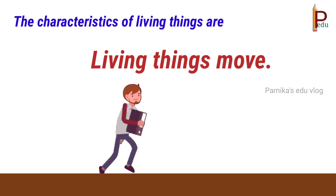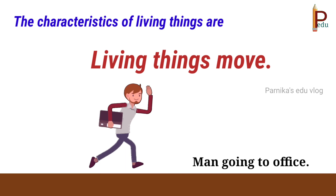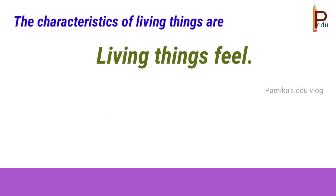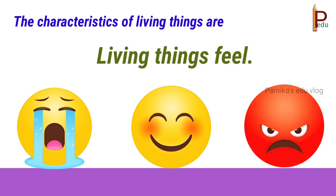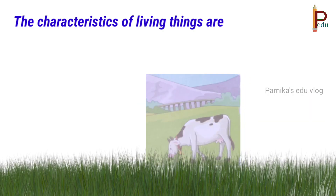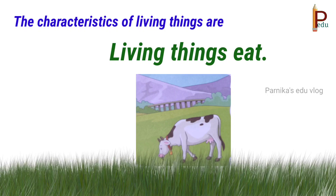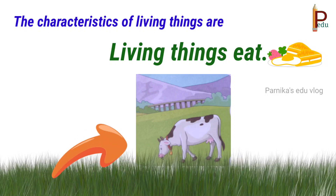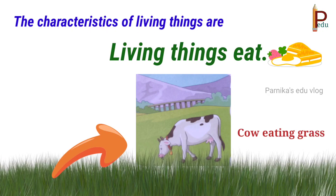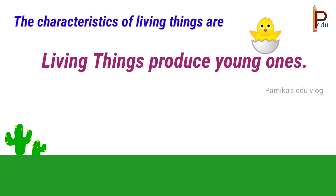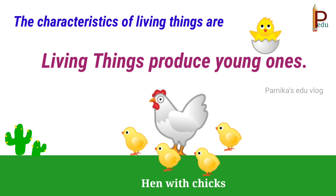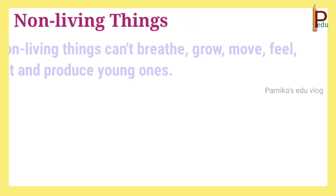Living things move — see here, a man going to office. Living things feel — just like crying, happy, and anger. Living things eat — look at the picture of a cow eating grass. Living things produce young ones — look here, a hen with chicks.